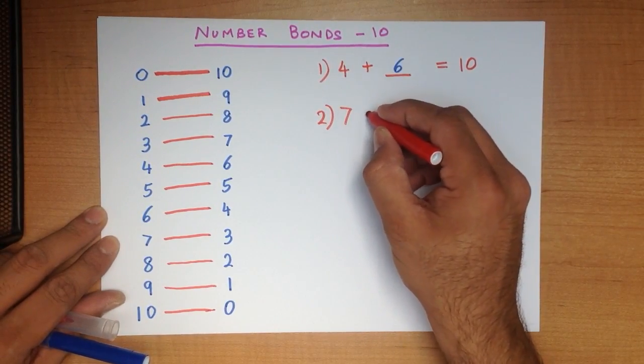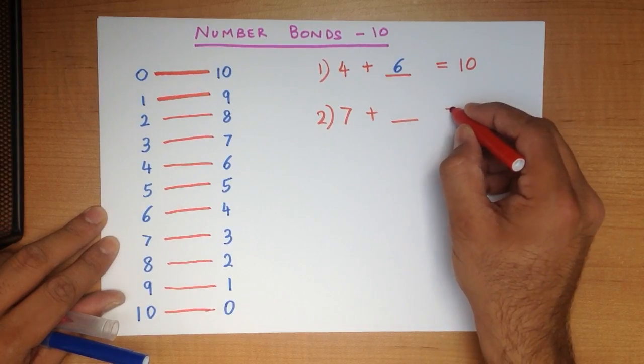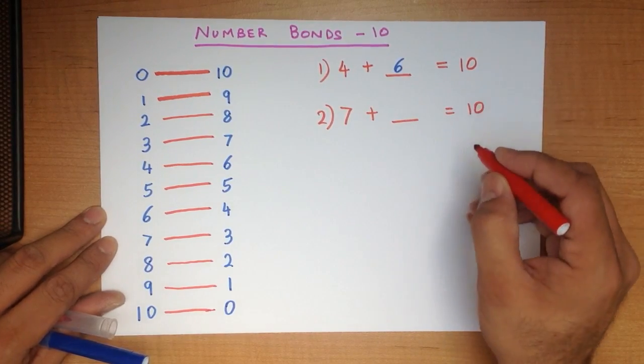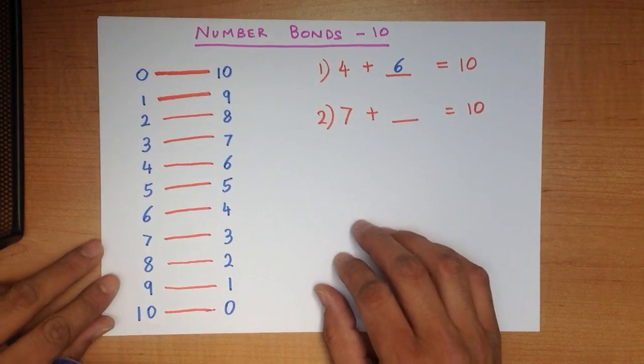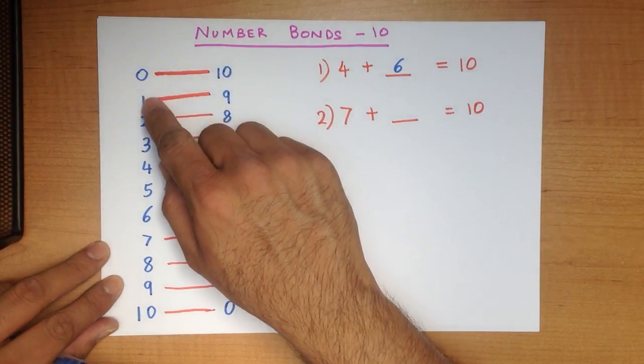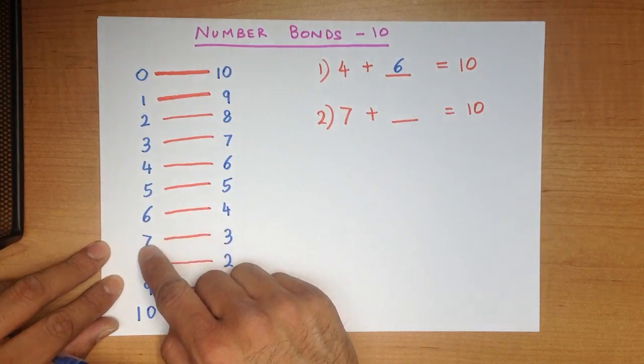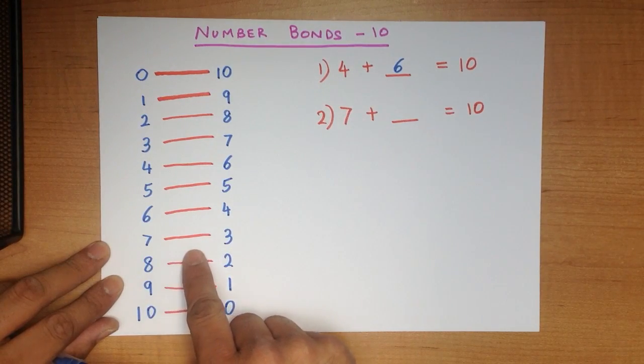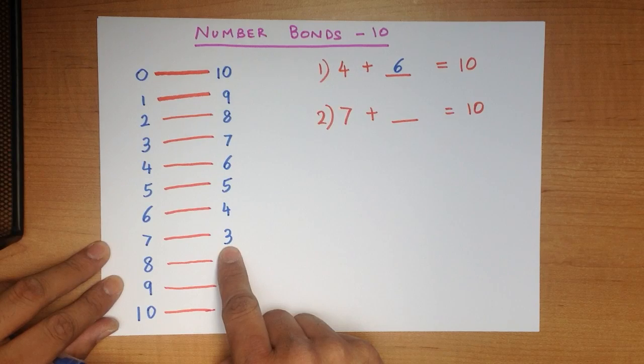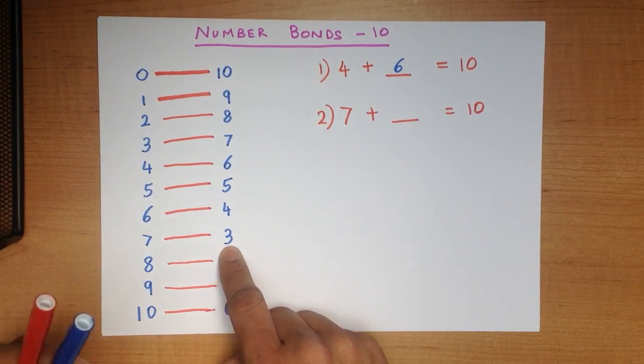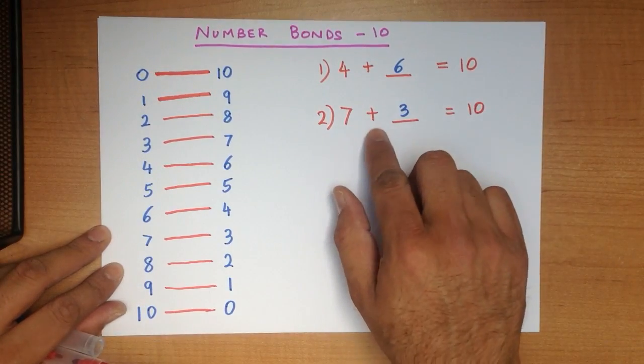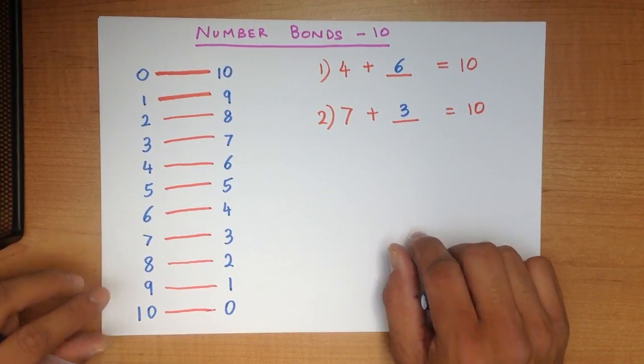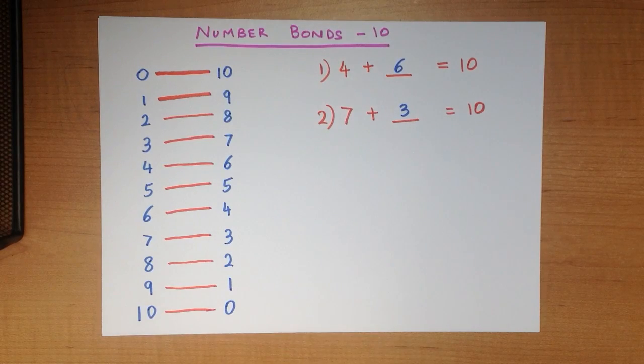Let's try another plus question. 7 plus something equals 10. On the left hand side, let's go all the way down to find number 7. What number added to 7 gives 10? It is 3, that's right 3. 7 plus 3 equals 10. That was nice and easy, wasn't it?